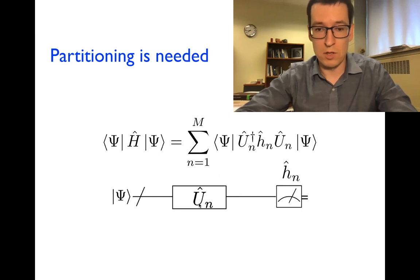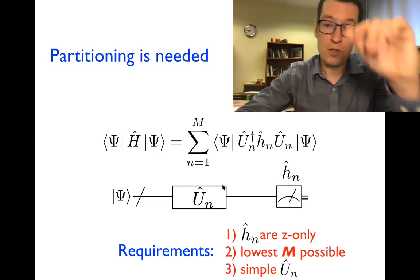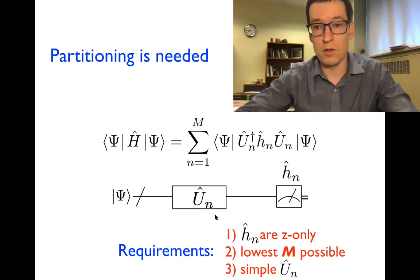Now, once we imagine did this, then the wave function will need to be transformed with the unitary and we measure the piece that is now full of z operators, hn. And the requirements for success of the scheme is that, of course, hn operators that you obtain, they need to be diagonal in z or they contain only z operators. You would like to have the smallest number of fragments as possible because for each fragment you need to do the sampling and you don't want to increase the number of sets to measure. And then number three is that the unitary transformation needs to be relatively simple, otherwise your circuit will be more complicated because of this measurement scheme.